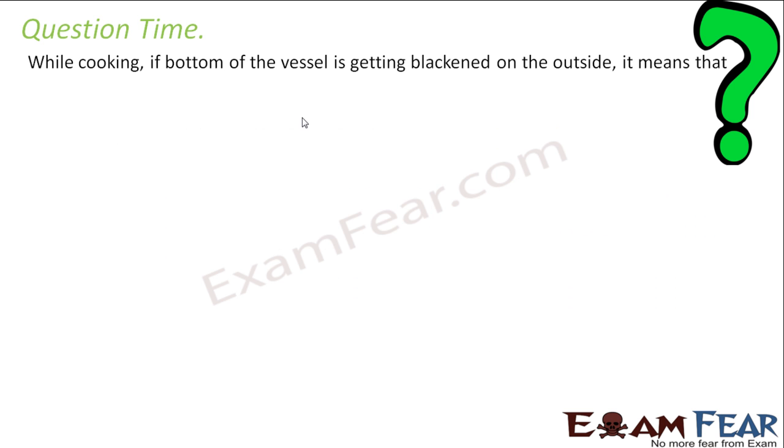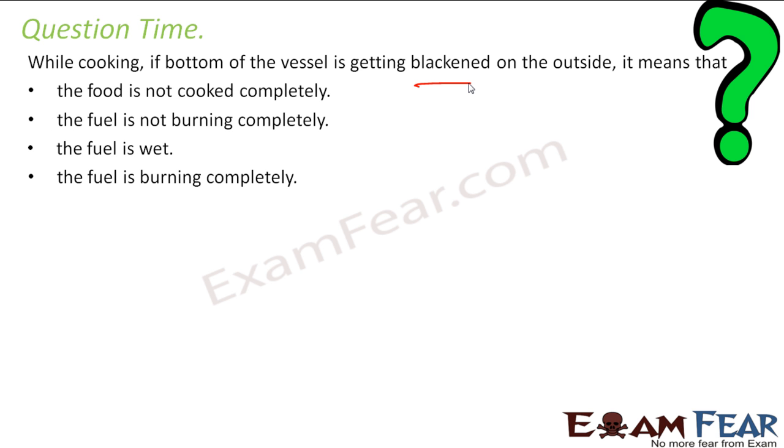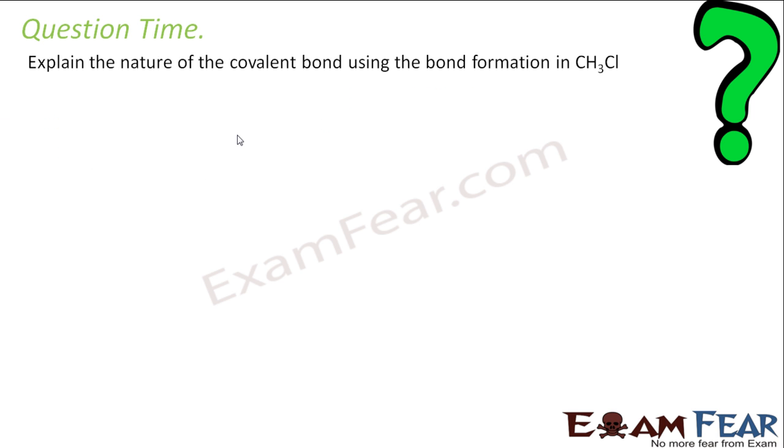While cooking, if the bottom of the vessel is getting blackened from outside, it means that one of these, which one? Food is not burning properly, yes. So if you're getting yellow sooty flame and smoke, that means the fuel is not getting burnt completely. So in that case, maybe the air hole is less, something happened. So you have to fix that issue.